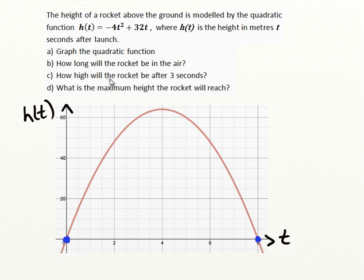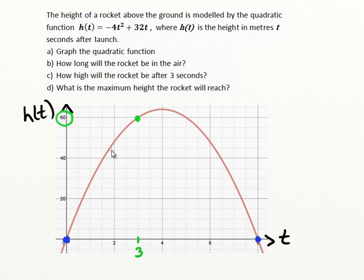How high will the rocket be after 3 seconds? Looking at question C: at 3 seconds on the graph, all I have to do is go up to the graph, find where it is at 3 seconds, and then go over to the side — and it would appear that at 60 meters after 3 seconds is the height of the rocket. So there's question C answered right from the graph.